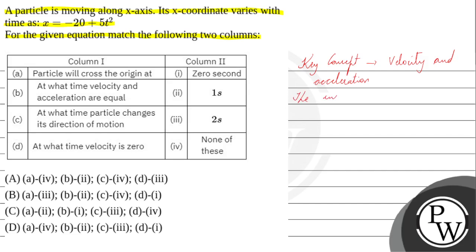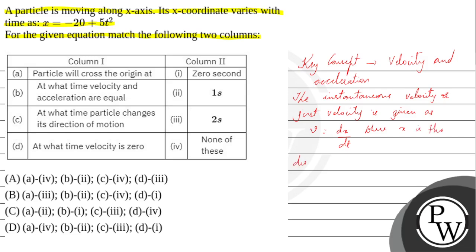The instantaneous velocity, or just velocity, is given as v is equal to dx by dt, where x is the displacement of the particle in the x-direction.